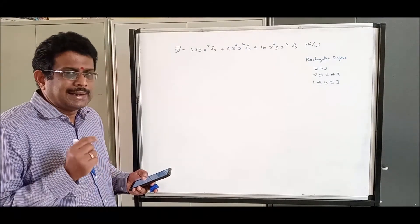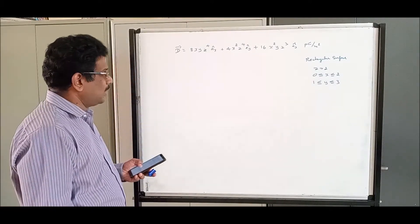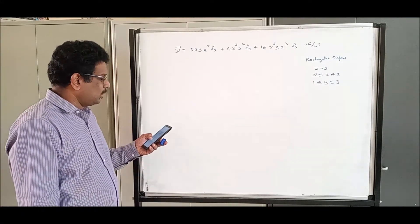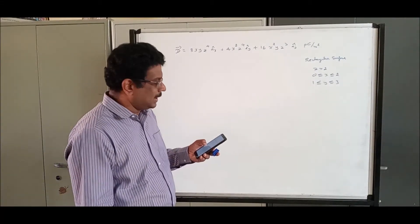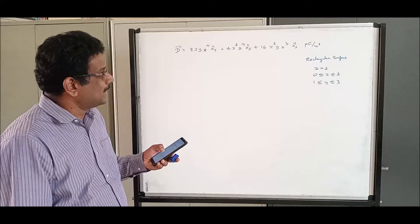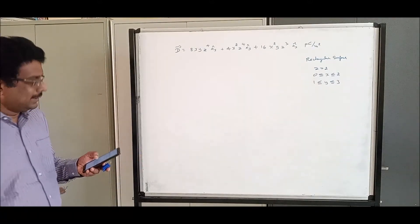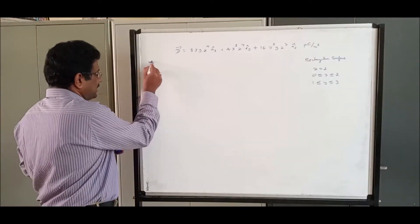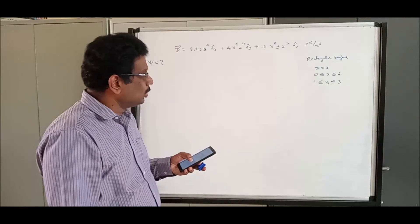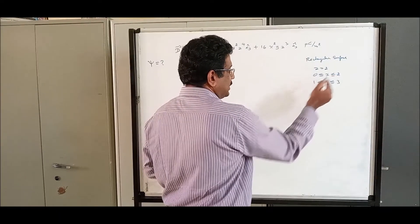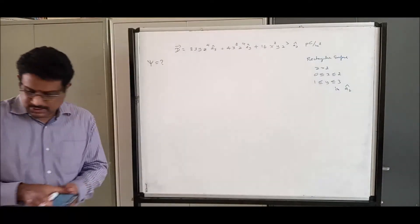Let us solve a problem. In free space, the electric flux density is D = 8xyz⁴ a_x + 4x²z⁴ a_y + 16x²yz³ a_z pico-coulombs per meter squared. Find the flux passing through the rectangular surface at z = 2, where 0 ≤ x ≤ 2 and 1 ≤ y ≤ 3, in the z-direction.